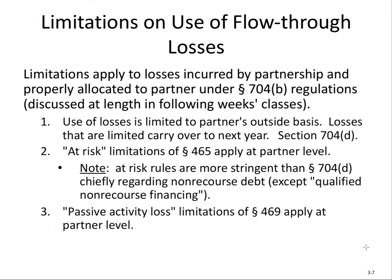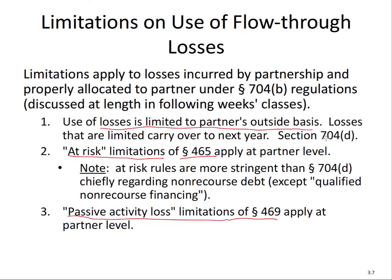The last thing to consider is the use of losses. Losses will adjust the basis, but whether a partner can actually take a loss depends on three things. First, losses are limited to the partner's outside basis at the time they occur. Next, we have to consider the rules of Section 465, the at-risk limitation, which has a separate video. Third, there's the passive activity loss rules. Any portion of a loss the partner cannot take will be suspended until the future, until future basis comes in and the partner can use it. This ends our discussion of the operations of a partnership and the tax issues related to that.